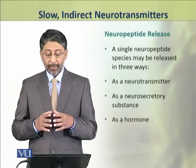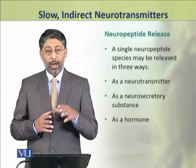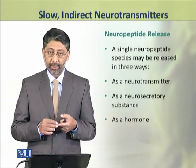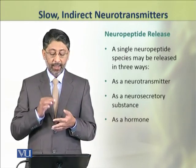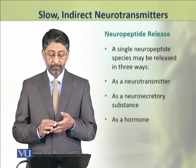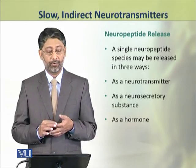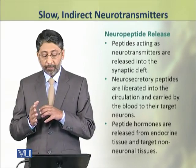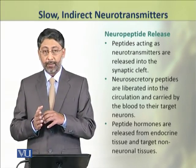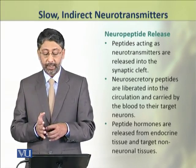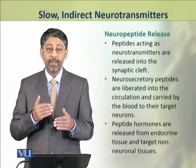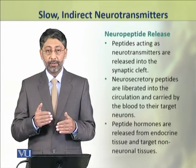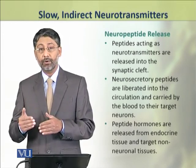Neuropeptides are released in three ways: as a neurotransmitter, as a neurosecretory substance, and as a hormone. When a peptide is secreted by a neuron directly onto a target, it acts as a neurotransmitter.